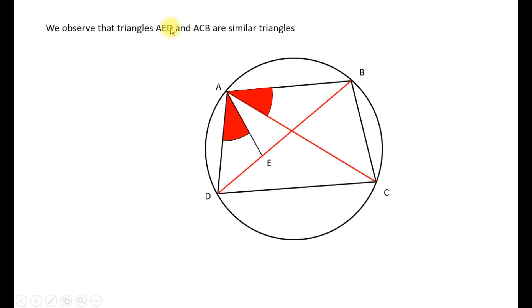Now we observe that the triangles AED and ACB are similar triangles. Why? Because this angle here EDA is equal to this angle here ACB because they are inscribed angles looking at the same arc and these two angles are chosen. We chose them to be equal so two of the angles are equal therefore the third one will be equal and these two triangles are similar.